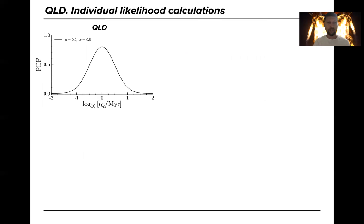So let's say we have a quasar lifetime distribution with the mean and sigma. First we sample this lifetime distribution, we draw a thousand log TQ values from it. These red dots on the plot.